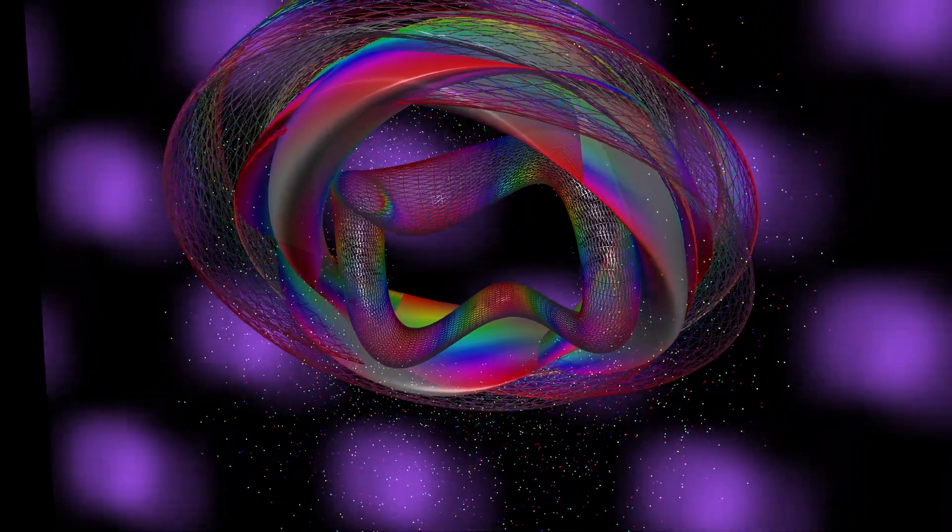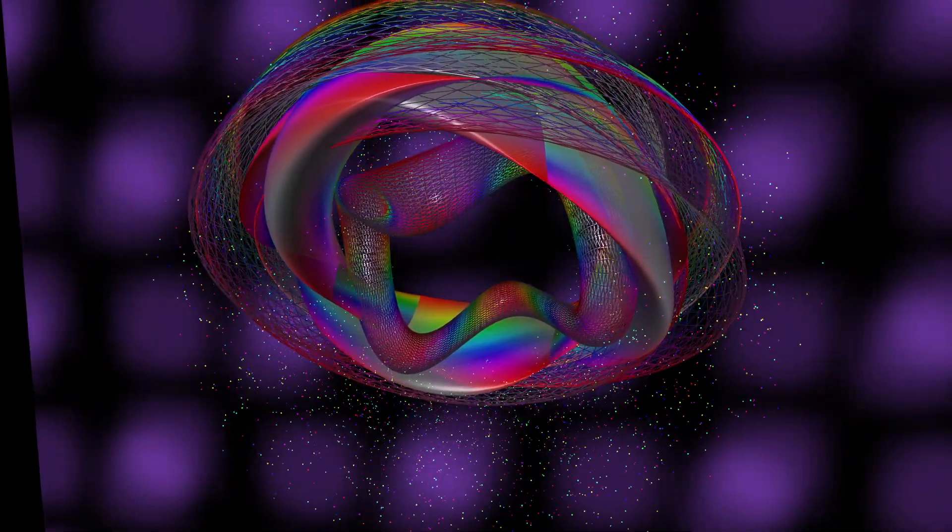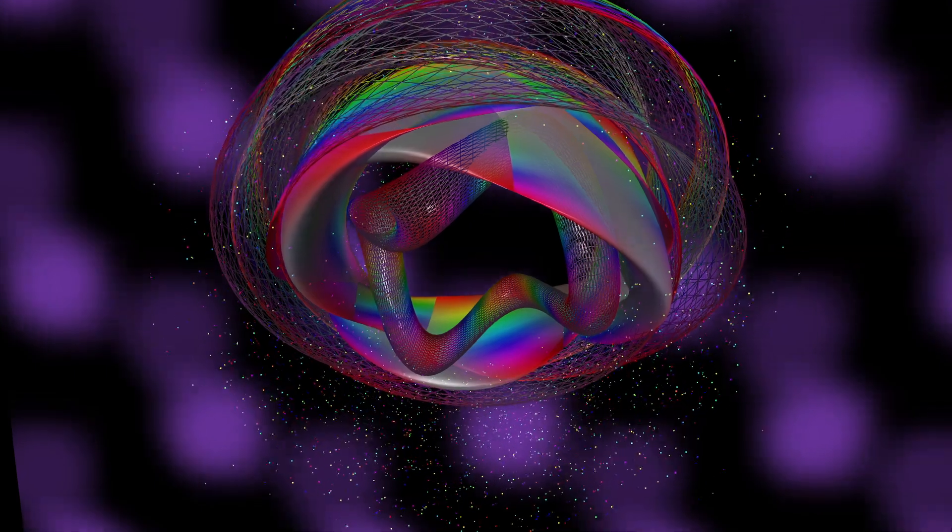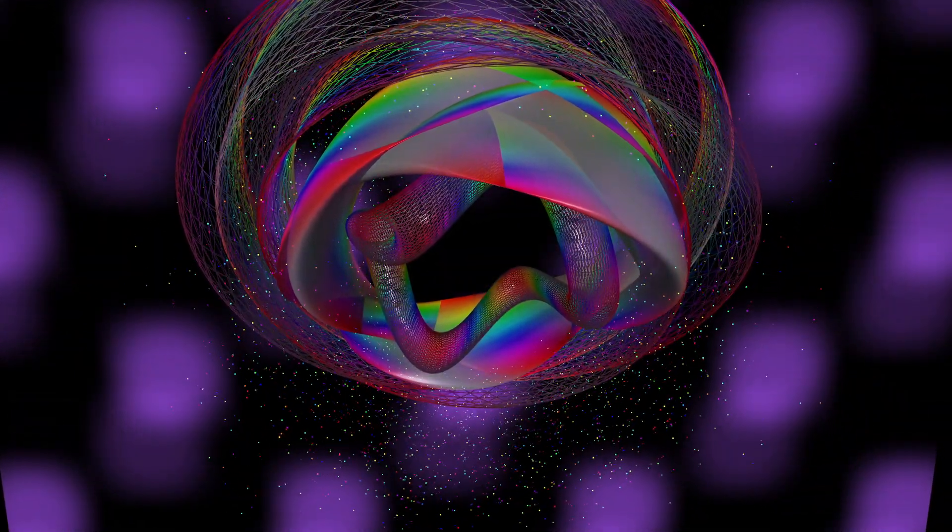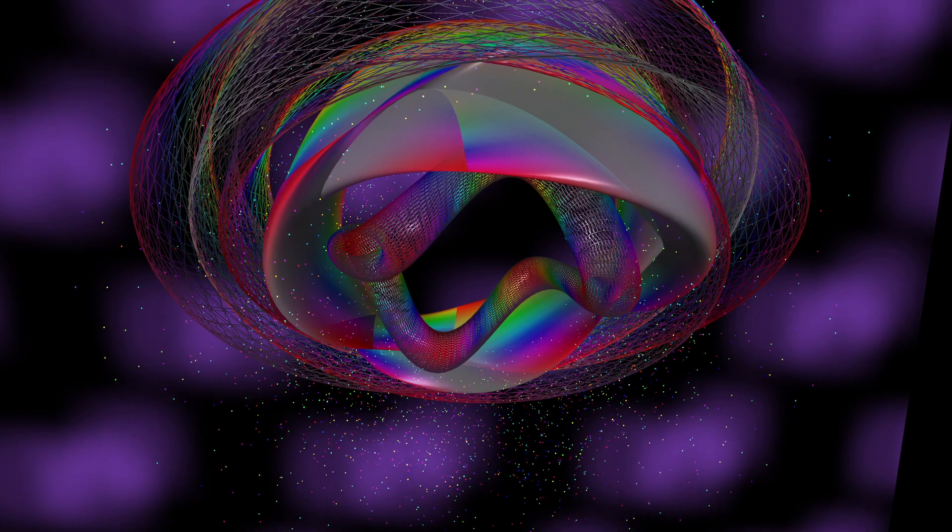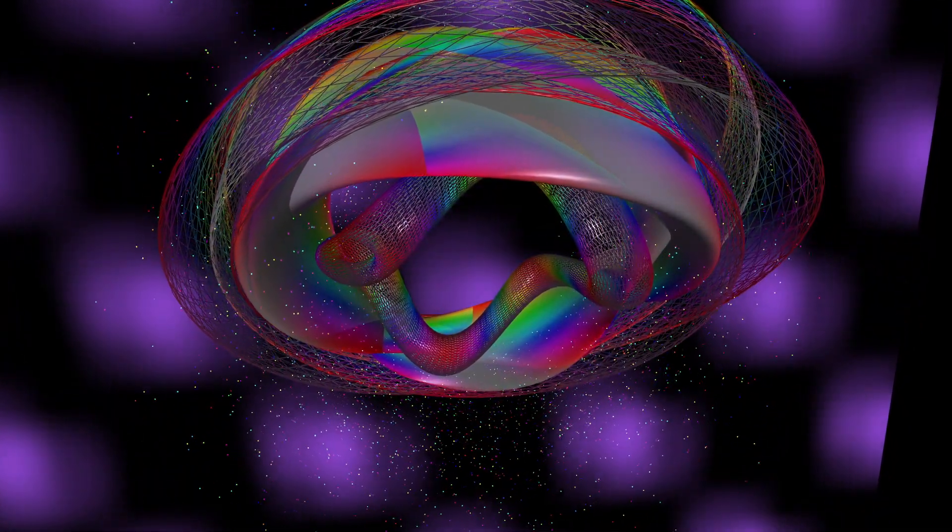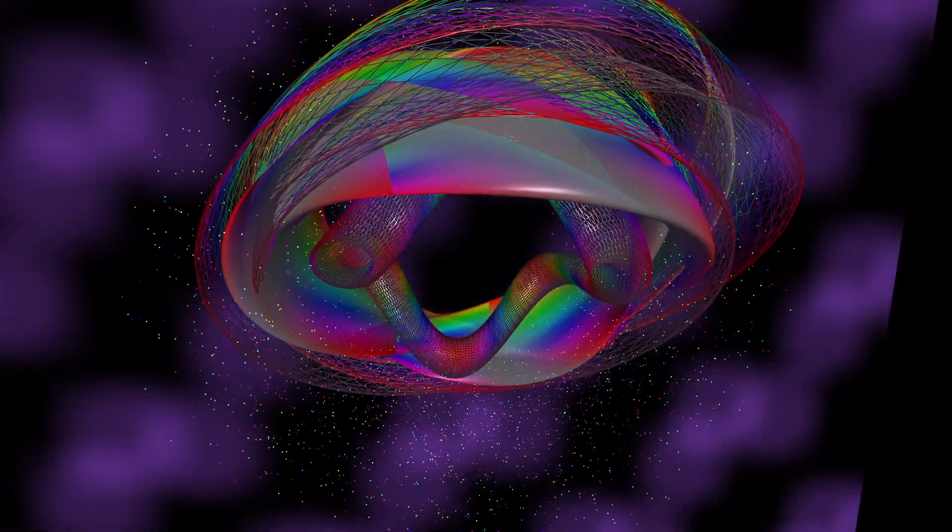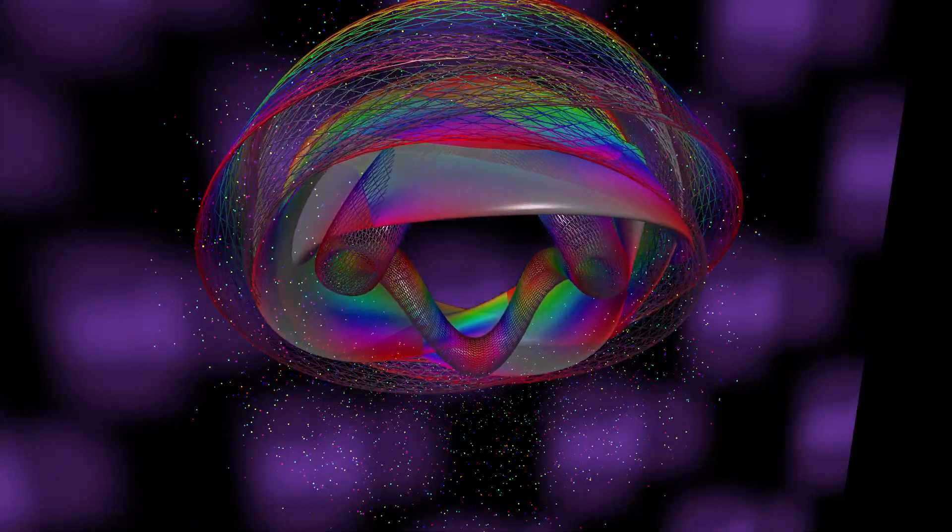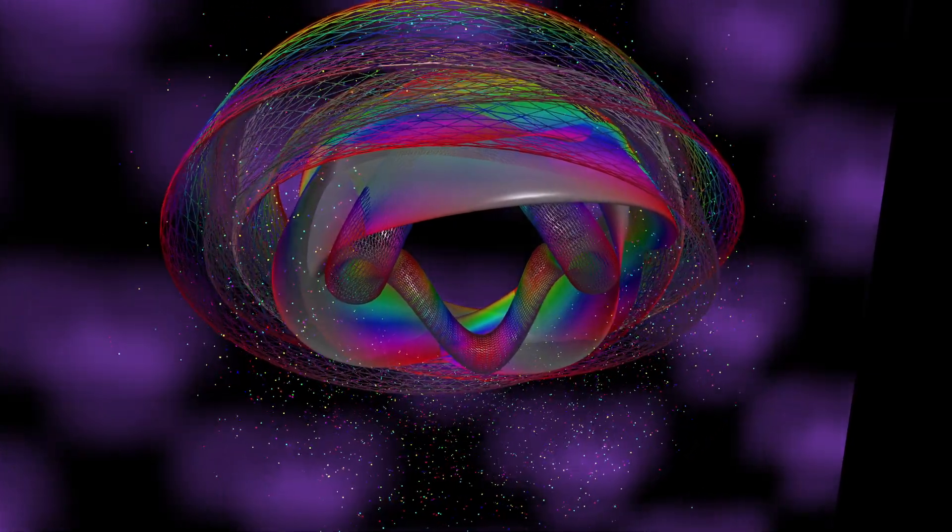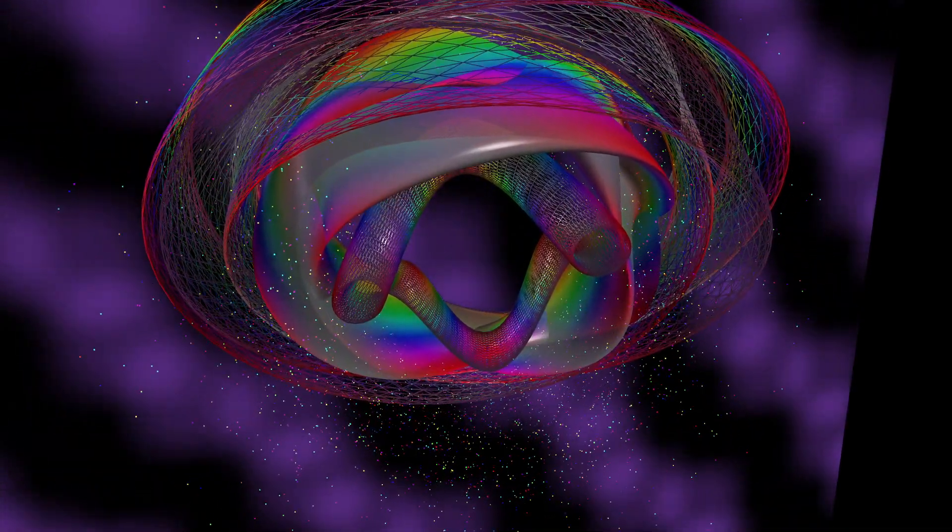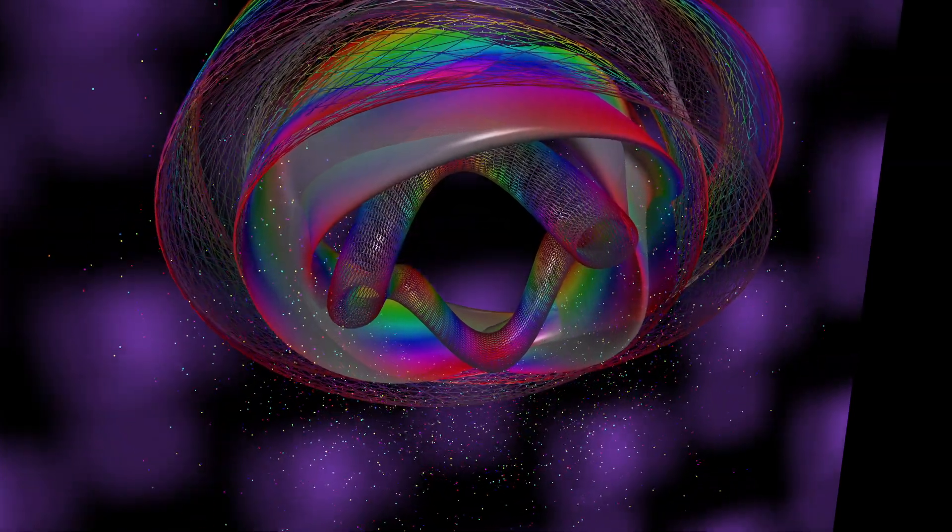Exactly. One way CERN is searching for evidence of extra dimensions is by looking for tiny black holes. Wait, black holes at CERN? Isn't that dangerous? Not at all. The black holes we're talking about are microscopic and they would evaporate almost instantly. They wouldn't pose any threat. The reason why they're interesting is that if extra dimensions exist, it would be easier to create black holes at the LHC than in a universe with only three spatial dimensions. So finding even a fleeting tiny black hole would be a huge clue that there's more to the universe than meets the eye. Absolutely. It would be a revolutionary discovery, shaking the foundations of physics and our understanding of reality.